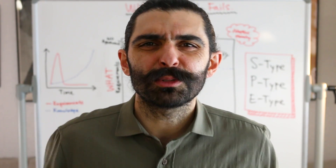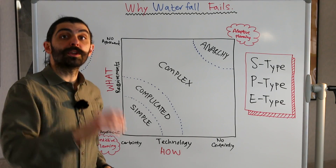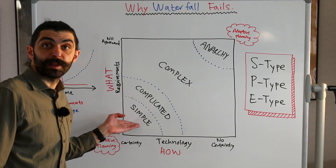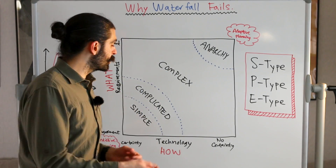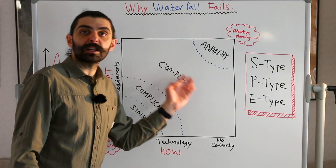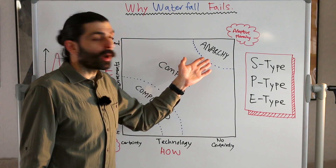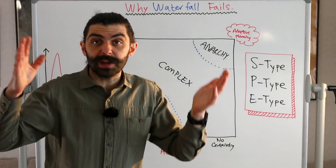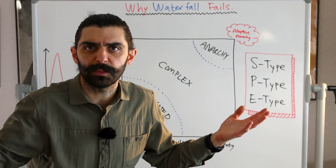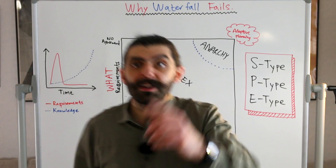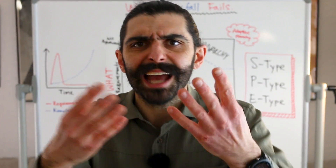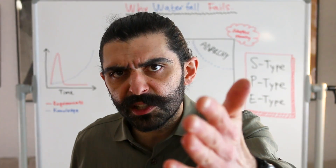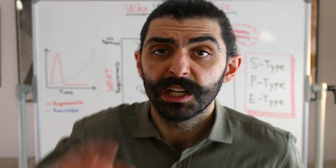So what's the argument in terms of waterfall? Waterfall is only suitable for projects in the simple zone. Iterative methods are suitable in the complicated and complex zones. And if your problem is in the anarchy zone, you need something that iterates at a higher level of abstraction, such as lean startup. I hope these three models have helped you understand why and when the waterfall method doesn't work. Please share your own thoughts and experiences in the comments.